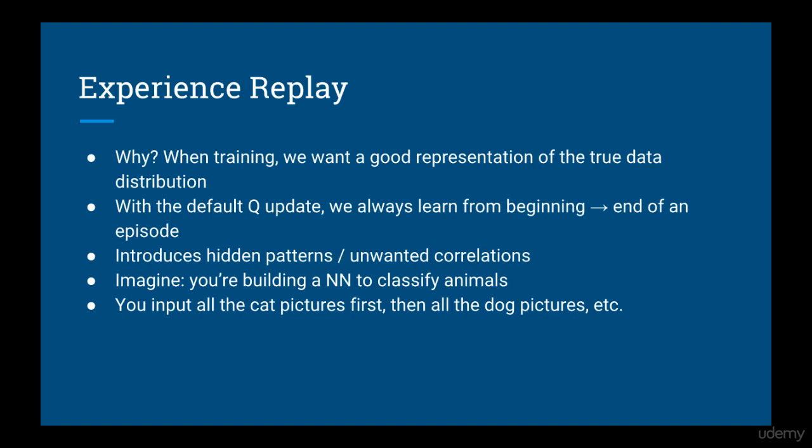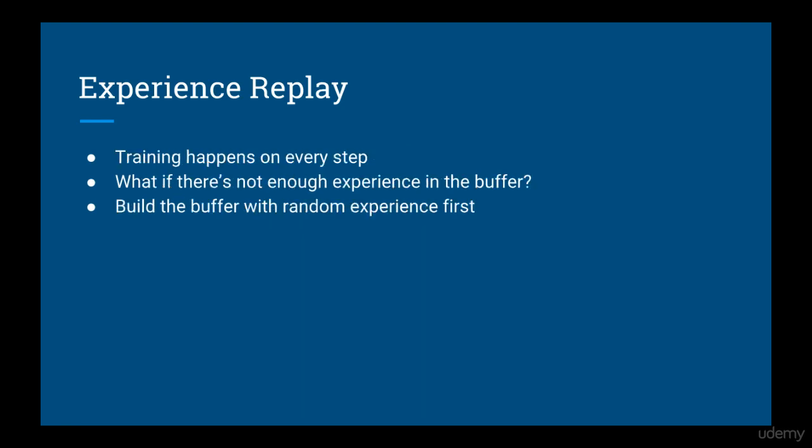By taking random samples from past experience, we get a better representation of the true data distribution. This is better than the default queue update, where there can be hidden patterns and correlations that will affect how the neural network learns. Imagine if you are trying to classify pictures of animals, but instead of your training data being evenly distributed animals, you first only have cats in your first batch, then you only have dogs in your second batch, and so on. This wouldn't work very well. Since queue learning happens on every step, you might be wondering what happens at the beginning when there hasn't been any actual experience to replay. The answer to this is that initially, we store random experience in the buffer. For instance, you can keep playing episodes and doing random actions until the buffer is filled.